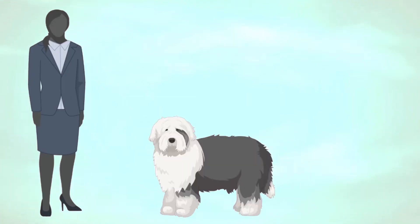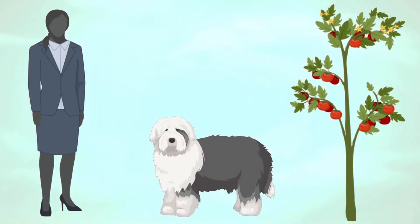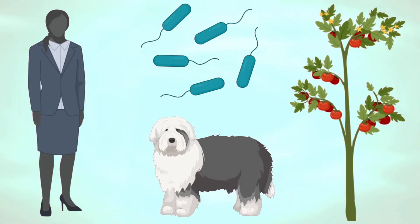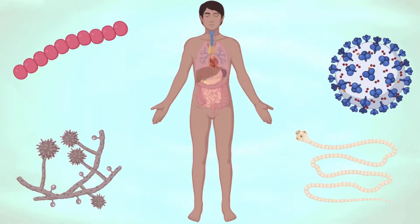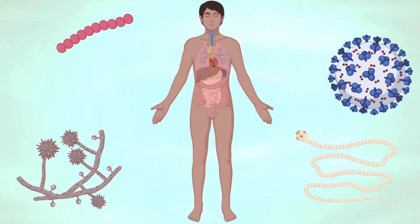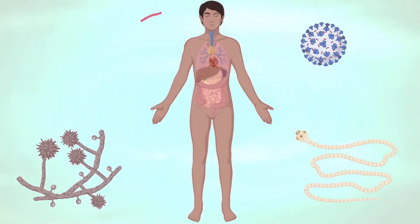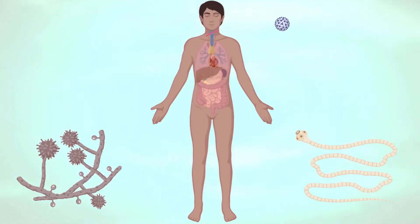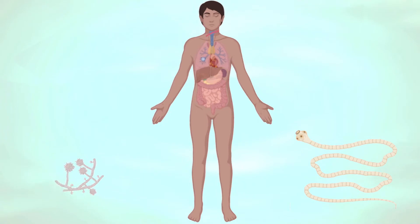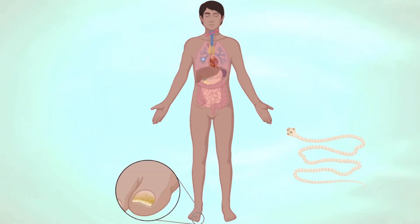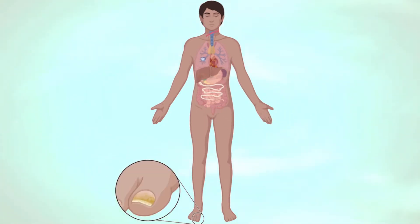Infections can affect any kind of living thing like people, pets, plants, and even bacteria. Different infections make people feel sick in different ways — they can affect different parts of the body, cause different kinds of symptoms, and they can spread to other people at different speeds.